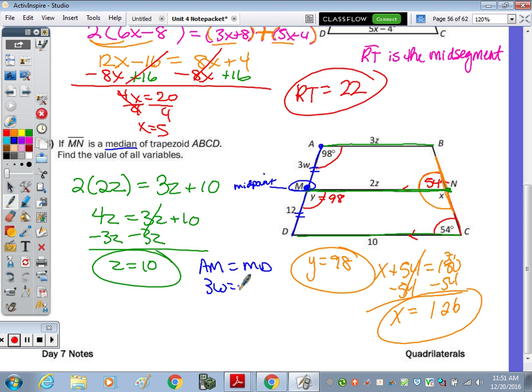So 3W equals 12. Divide both sides by 3, and W is 4.